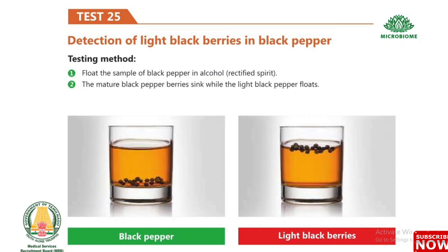Test 25: Detection of light blackberries in black pepper. Float the sample of black pepper in alcohol (rectified spirit). The mature black pepper berries sink, while the light black pepper floats.